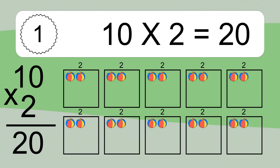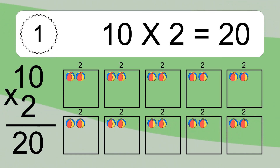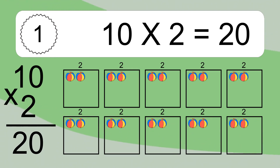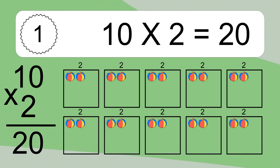We have 10 boxes, and each box has 2 colorful balls inside. If you count all the balls in all the boxes together, you will have 10 times 2 balls. This equals 20 balls.